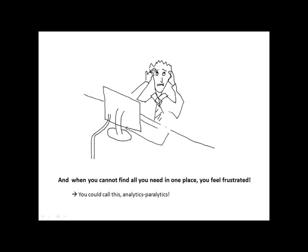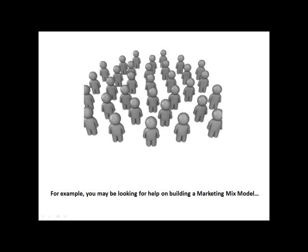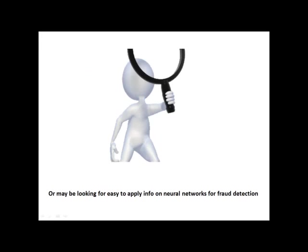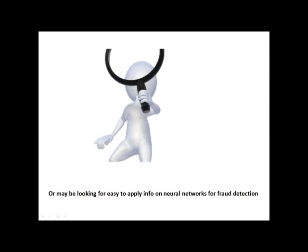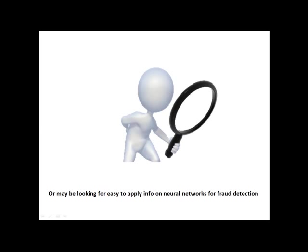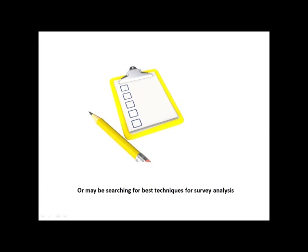You could call this analytics paralytics. For example, you may be looking for help on building a marketing mix model. Or, you may be looking for easy to apply information on neural networks for fraud detection. Or, you may be searching for the best techniques for survey analysis.